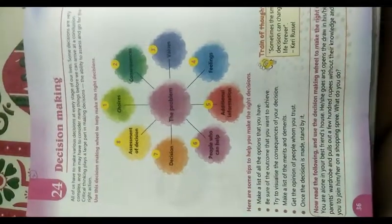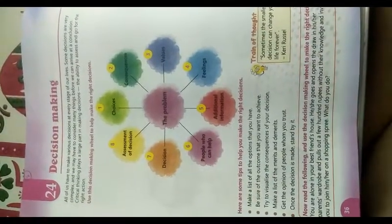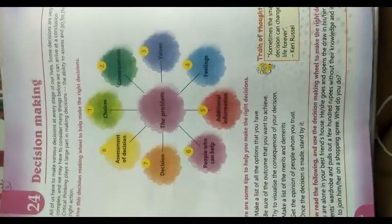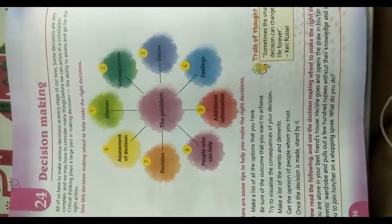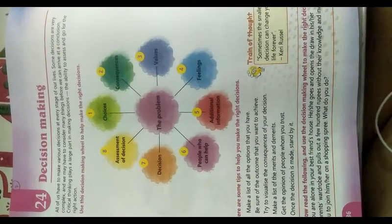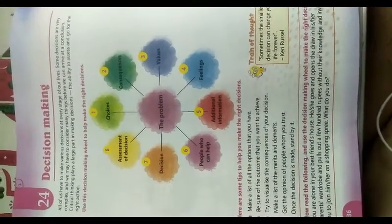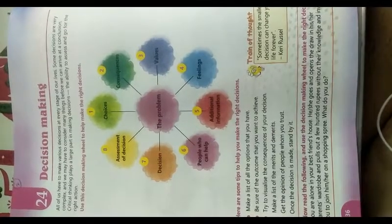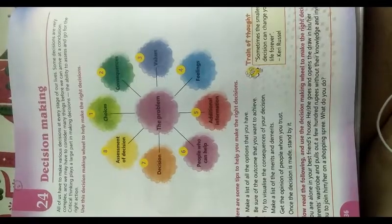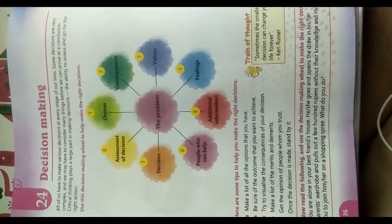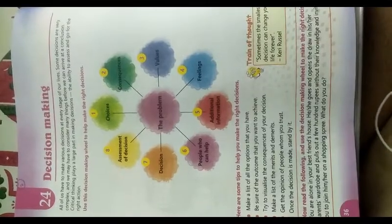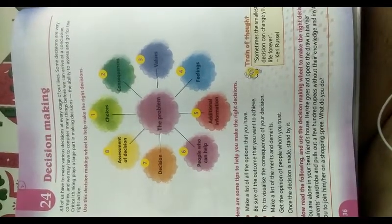Hello students, today we are going to start Class 5 subject GK, Chapter 24: Decision Making. All of us have to make various decisions at every stage of our lives. Some decisions are very complex and we may have to consider many things before we can arrive at a conclusion. Critical thinking plays a large part in making decisions.